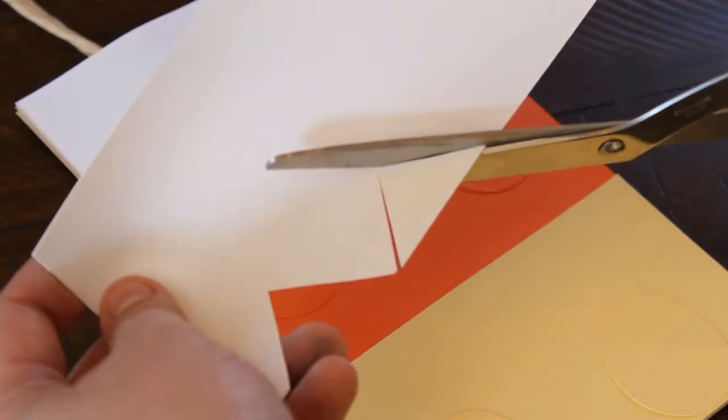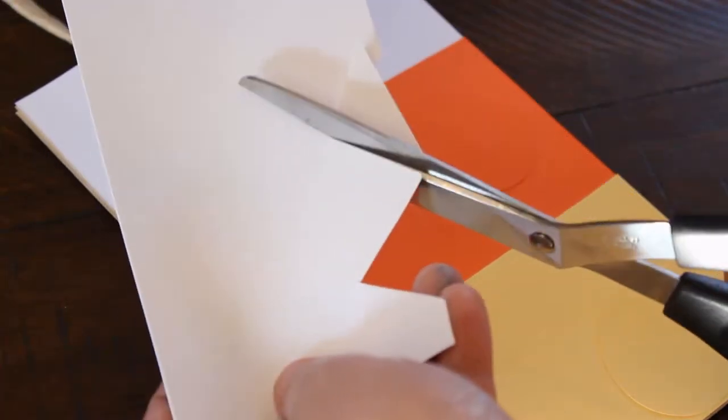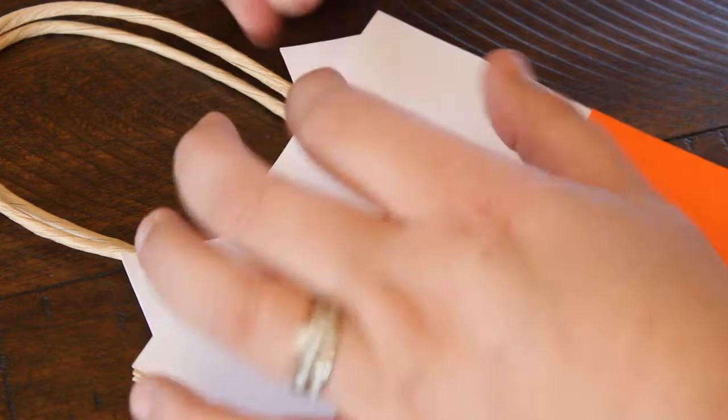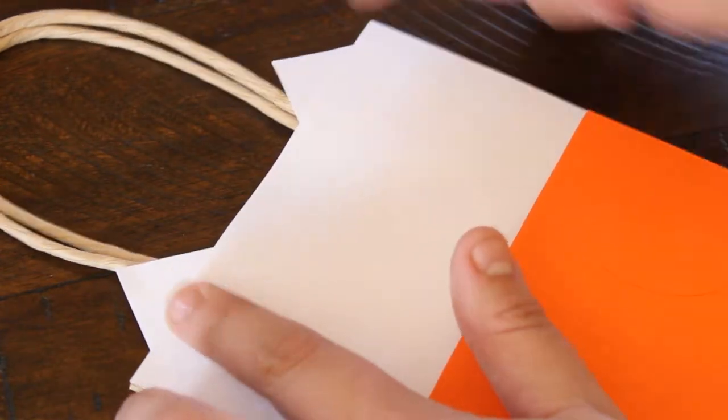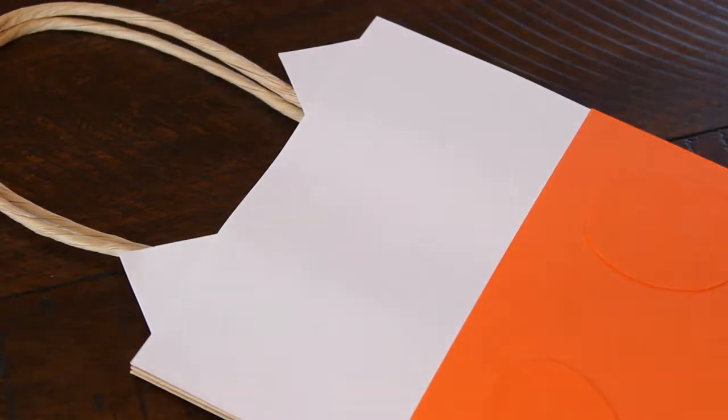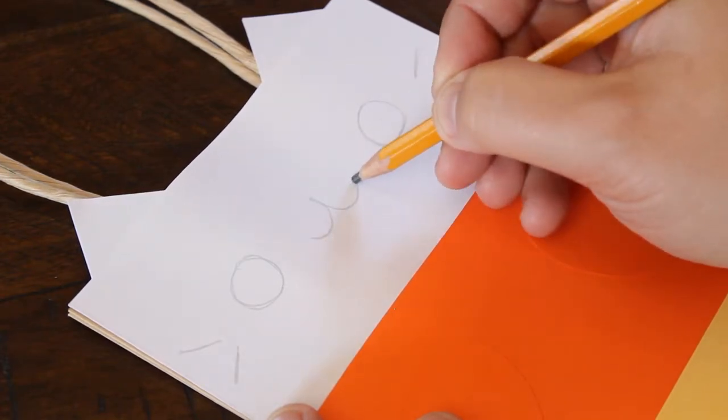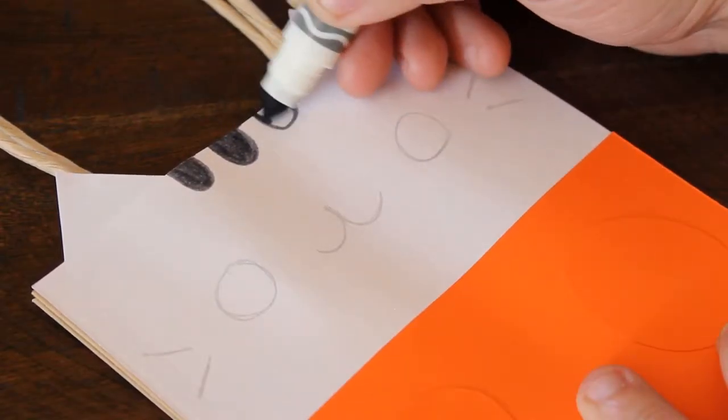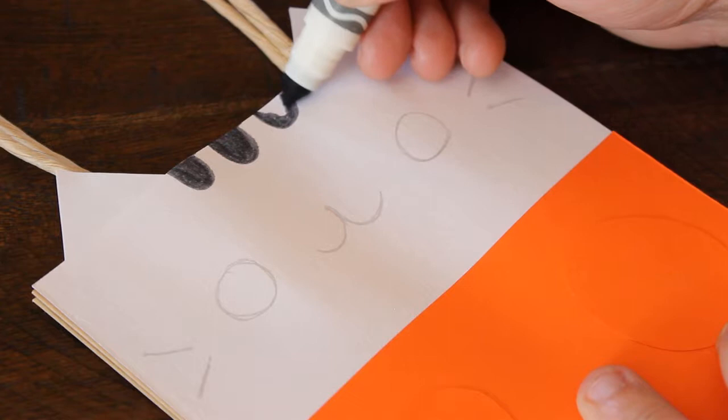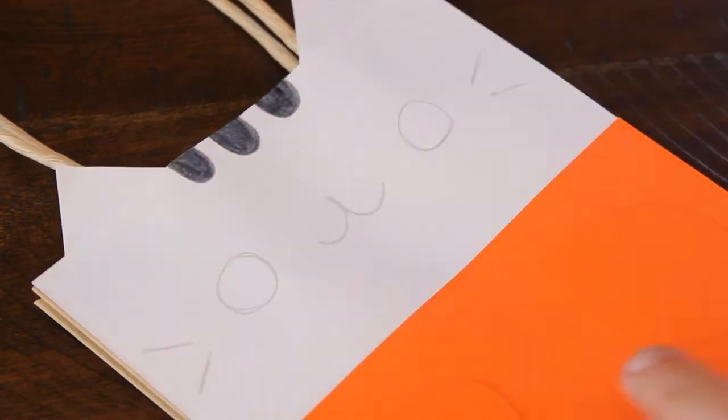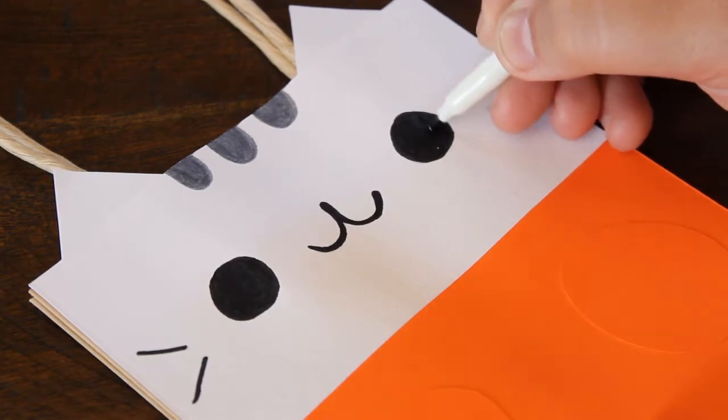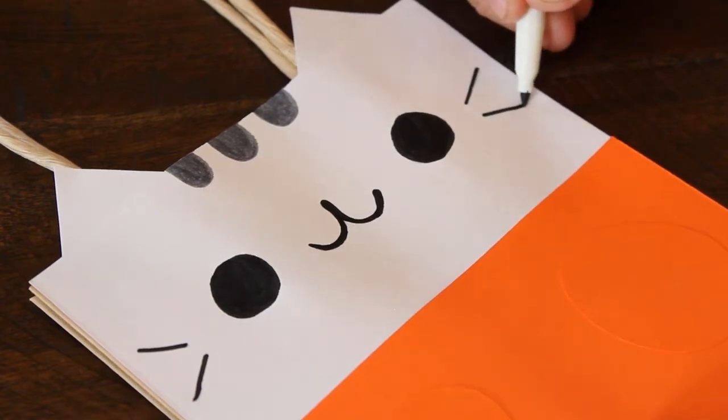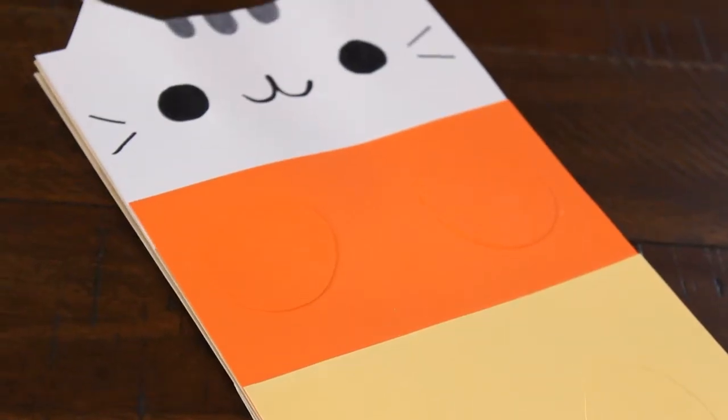Then again for the ears, just cut out some triangle shapes in the white from the scrap paper and glued those into the top. At this point I can go in, trace out the face in pencil, and then go back in with my black marker and trace it out and add in the gray stripes on the top as well. And candy corn Pusheen is done!